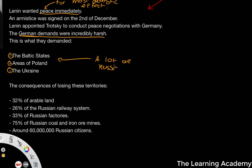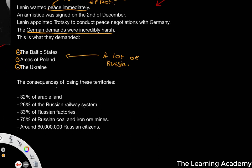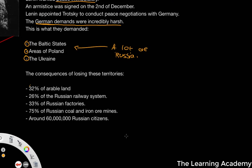The consequences of losing these territories would mean that 32% of arable land would have been lost, 26% of the Russian railway system acquired, 33% of Russian factories, 75% of Russian coal and iron oil mines, and around 60 million Russian citizens — cutting a huge chunk of the Russian state and acquiring it for Germany.